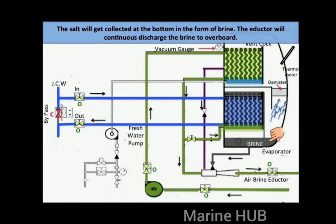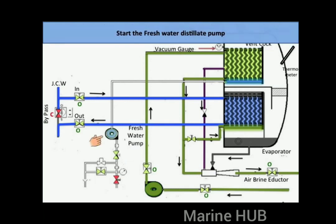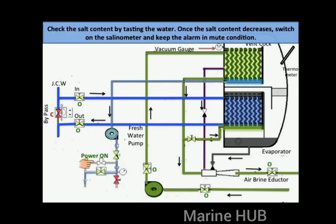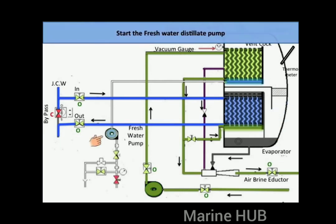The salt will collect at the bottom in the form of brine, and the inductor will continuously discharge the brine overboard. Open the fresh water distillate pump discharge valve and the bypass valve of the salinometer to initially check the salt content, keeping the discharge valve to the fresh water tank shut. Start the fresh water distillate pump and check the salt content by tasting the water. Once the salt content decreases, switch on the salinometer and keep the alarm on mute. Shut the bypass valve and activate the alarm once the salinometer reading goes below the alarm limit, then open the fresh water tank filling valve so the generated fresh water collects in the desired tank.